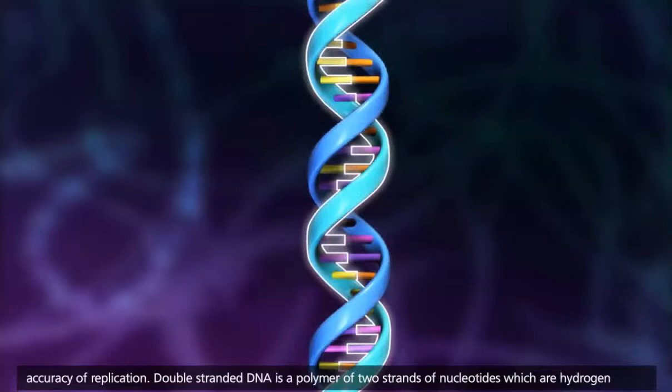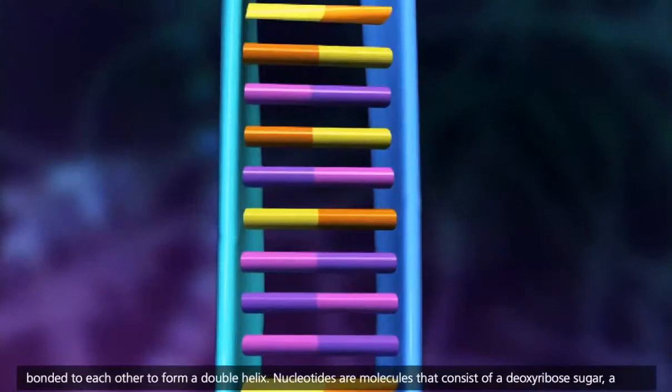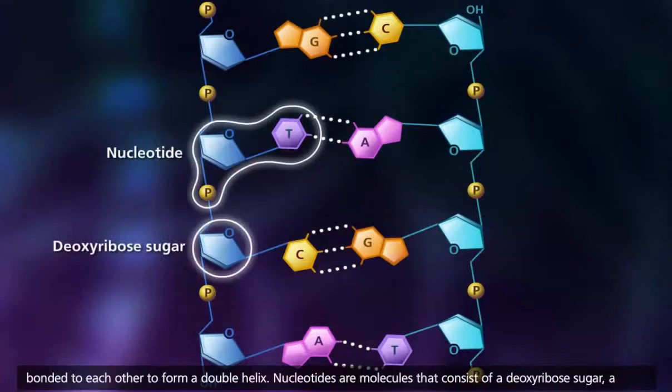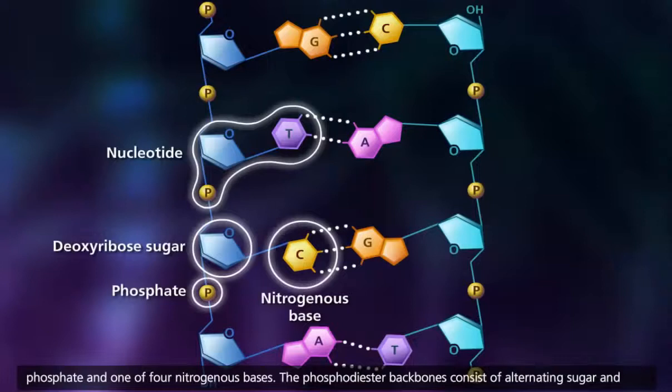Nucleotides are molecules that consist of a deoxyribose sugar, a phosphate, and one of four nitrogenous bases. The phosphodiester backbones consist of alternating sugar and phosphate groups.